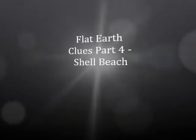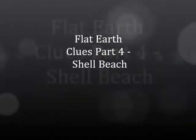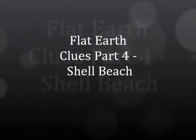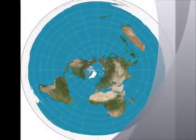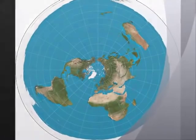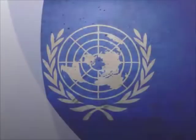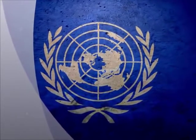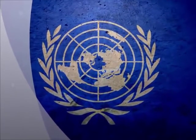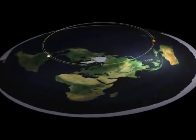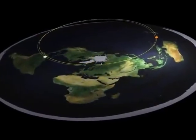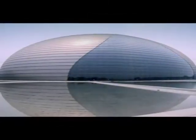Flat Earth Clues Part 4: Shell Beach. This is part of a series of clues that can help you get your head around both the design of the Flat Earth system we live in, and who has been involved in the deception to hide it from you. This clue covers the near-perfect design of the Flat Earth model, and will break down some of the logic behind the decisions made.